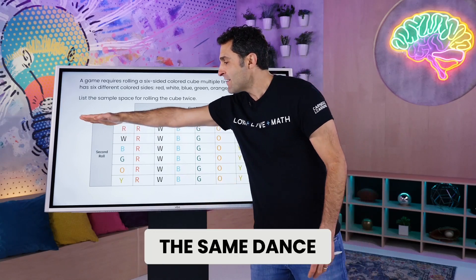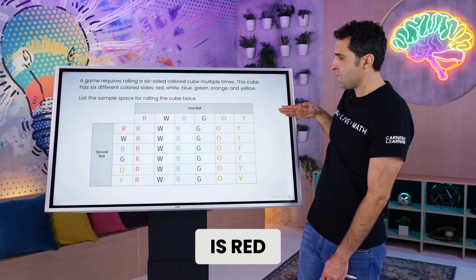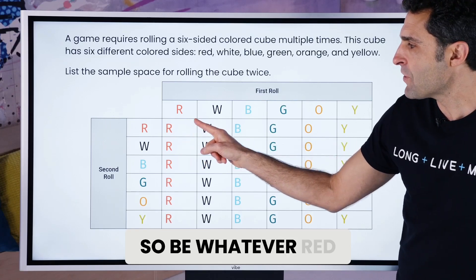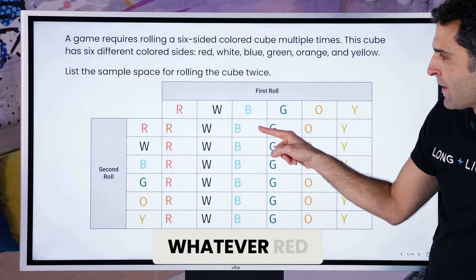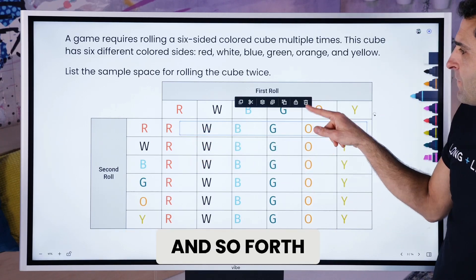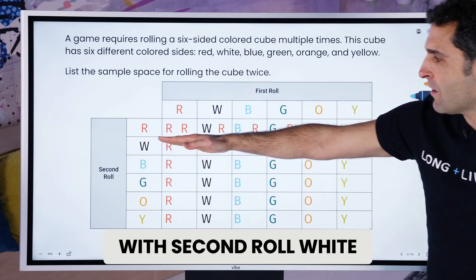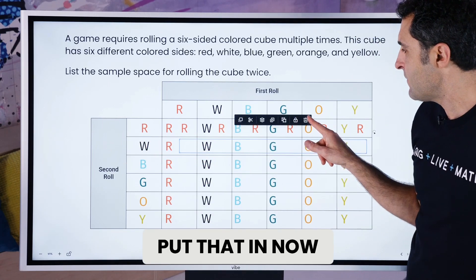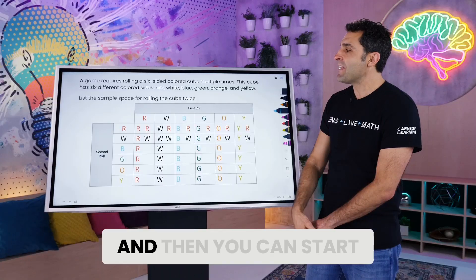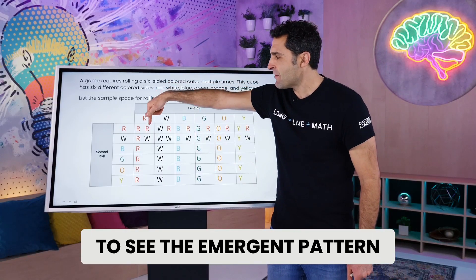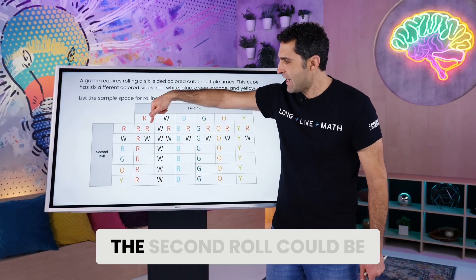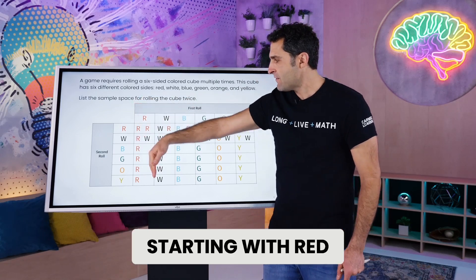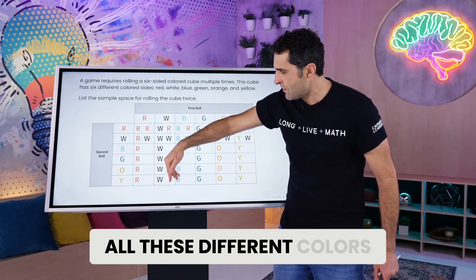We could do the same for the second roll — second roll red, so whatever-red, whatever-red, and so forth. Same thing with second roll white — all the second rolls being white, put that in now. And then you could start to see the emergent pattern on the second roll. The second roll could be all these different colors, starting with red, starting with white.